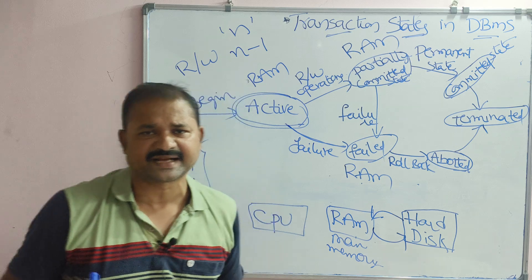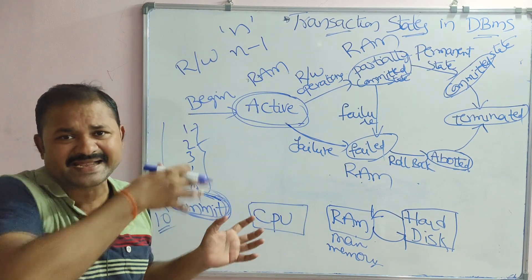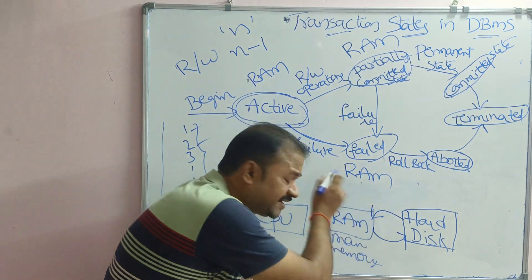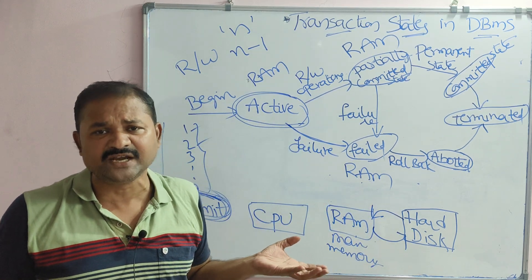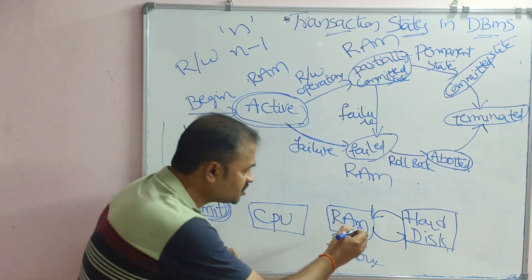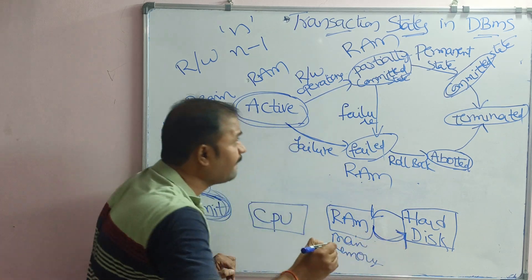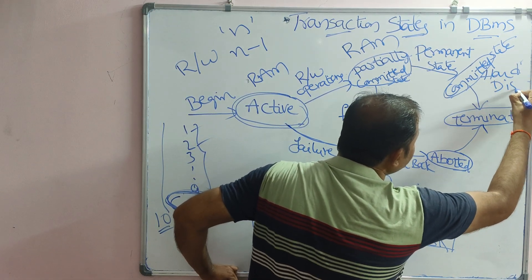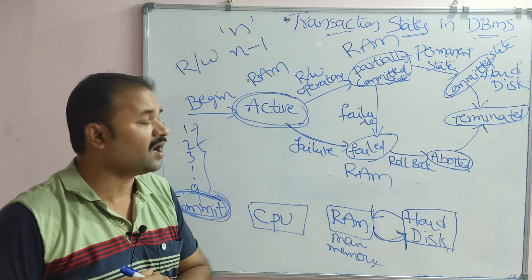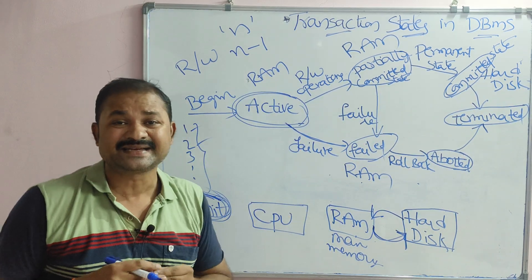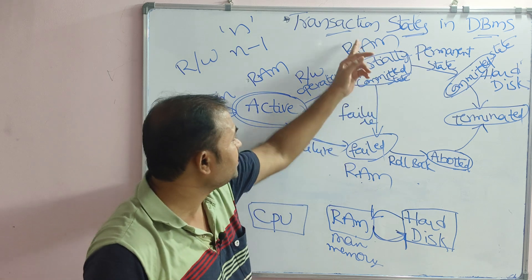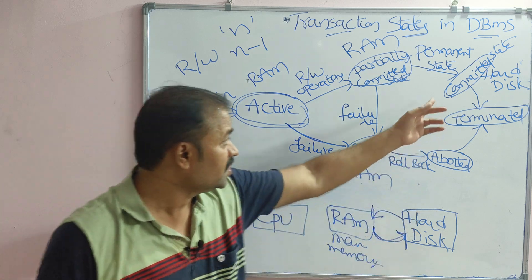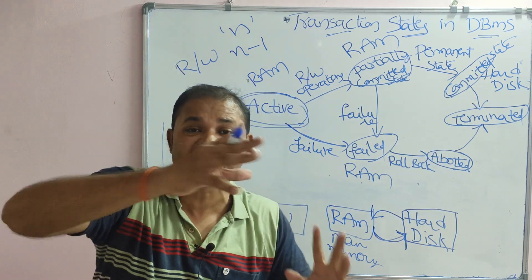What is the committed state? Committed state means the entire transaction has been executed successfully. There is no longer any need for the transaction in RAM, so the operating system transfers the transaction to the hard disk. We can say that committed state means the transaction is in hard disk. In contrast, active state, partially committed state, and failed state all mean the transaction is in RAM.